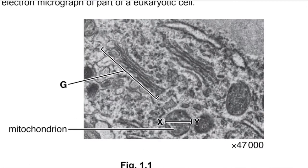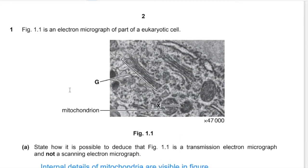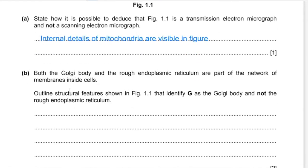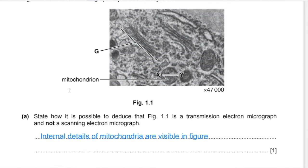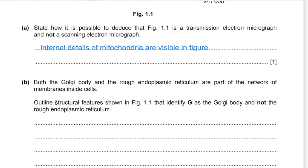G over here is this structure which you can see has fluid-filled sacs stacked upon one another, which is the description of Golgi body. Also, rough endoplasmic reticulum is associated with ribosomes, which clearly are not visible on structure G. So this is a Golgi body.